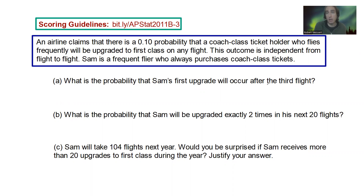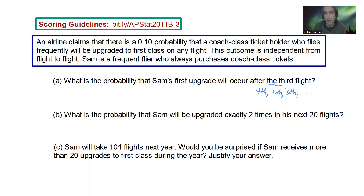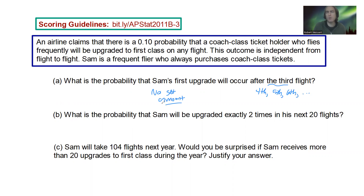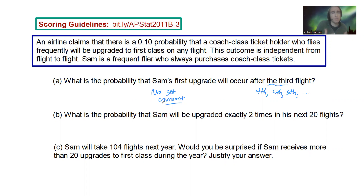Meaning it could be the fourth, fifth, sixth, etc. There's no ending to it, so we don't have a set amount. So what kind of a probability distribution doesn't have a fixed amount? We have worked with some that have a fixed amount and some that don't. Which one would this be?